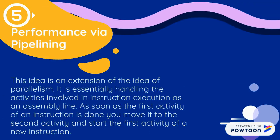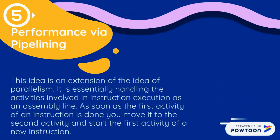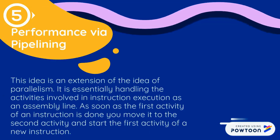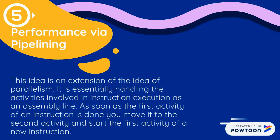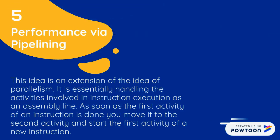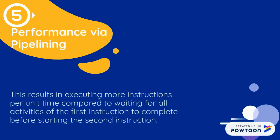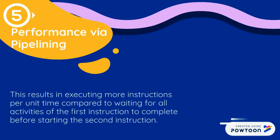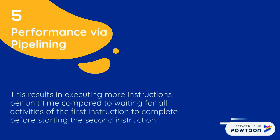Performance Via Pipeline. This idea is an extension of parallelism — essentially handling the activities involved in instruction execution as an assembly line. As soon as the first activity of an instruction is done, you move it to the second activity and start the first activity of the new instruction. This results in executing more instructions per unit time compared to waiting for all activities of the first instruction to complete before starting the second.